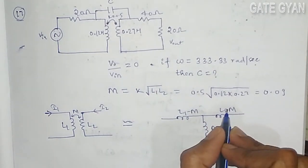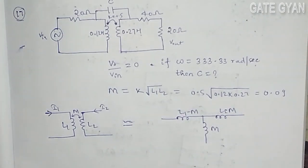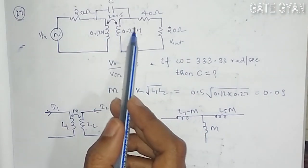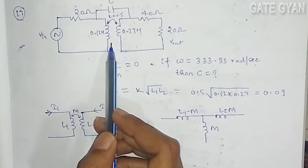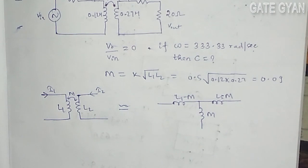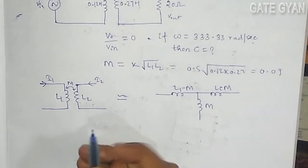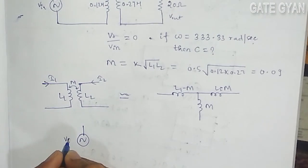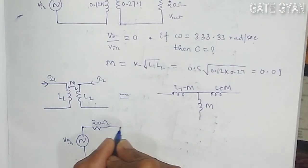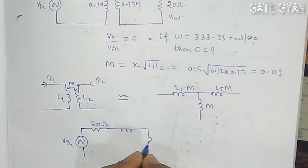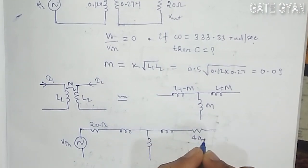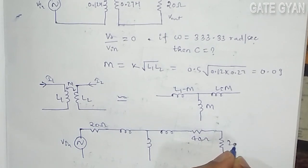So here in this circuit also I will replace this transformer coupling with this equivalent circuit. So my new circuit will look like: this resistance is 20 ohm, this is 40 ohm, 20 ohm plus minus, Vout is here, and then the capacitor. This is my C which I have to find.